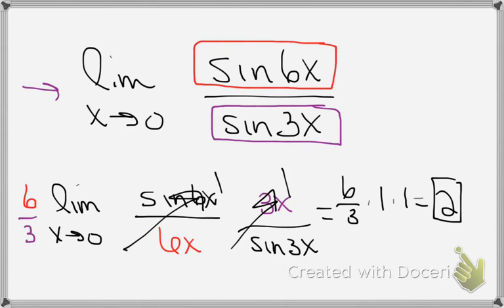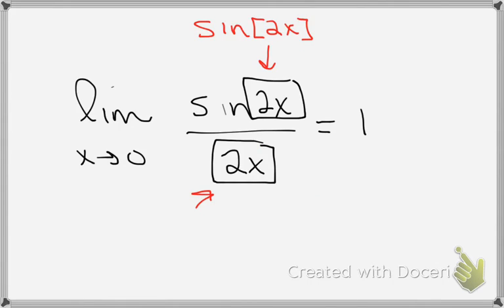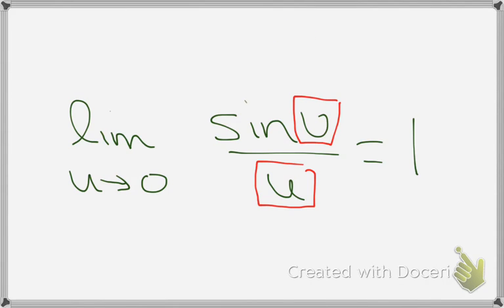So to recap, when we're taking limits of anything that looks like sine of u over u, as u goes to 0, we know that's 1. And we'll just carefully manipulate, remembering that that u is part of the argument of the sine function.